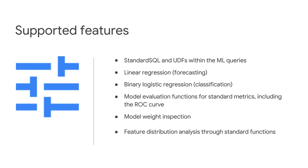Here are some of the features BigQuery ML supports. Since it is just SQL, it supports any standard SQL functionality that BigQuery supports, including user-defined functions. In terms of modeling, it supports linear regression for forecasting scenarios and binary logistic regression for classification. There are built-in SQL functions for model evaluation and building things like ROC curves. There is the possibility of inspecting model weights for each individual feature, and there are also functions to help with feature distribution analysis.